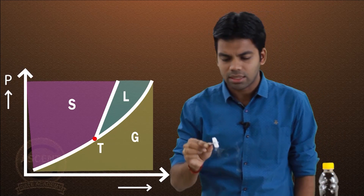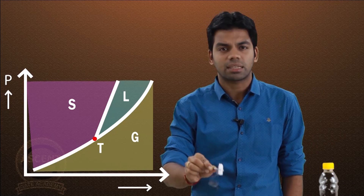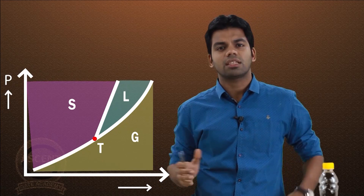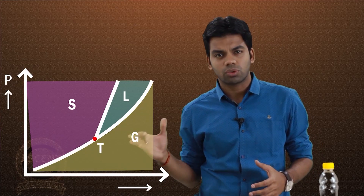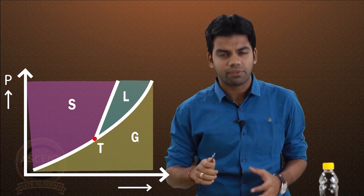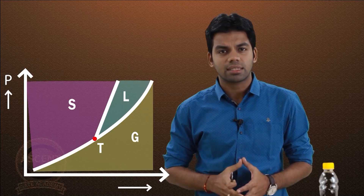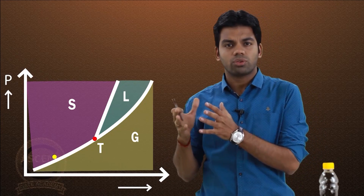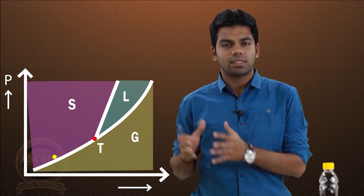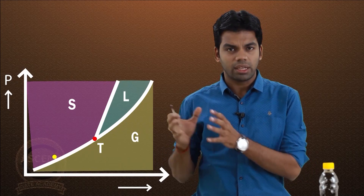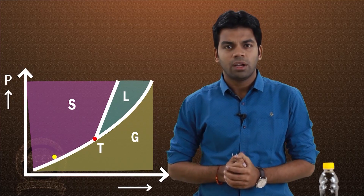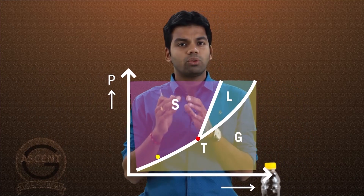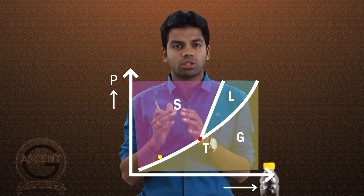Looking at the PT diagram for CO2: the dry ice initially exists at a point in the solid phase. The triple point is at 5 atmospheres and 216.5 Kelvin, whereas atmospheric conditions are around 1 atmosphere and 293 Kelvin (approximately 20°C). The atmospheric point is well above the triple point on the diagram.